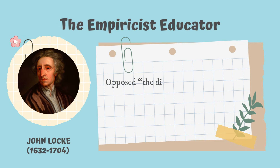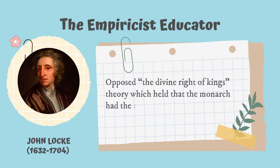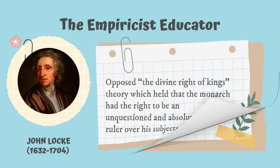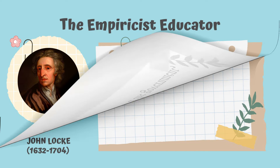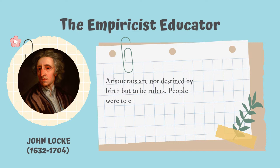Locke also opposed the divine right of kings theory, which held that the monarch had the right to be an unquestioned and absolute ruler over his subjects. The political order should be based upon a contract between the people and the government, and aristocrats are not destined by birth to be rulers. People were to establish their own government and select their own political leaders from among themselves.